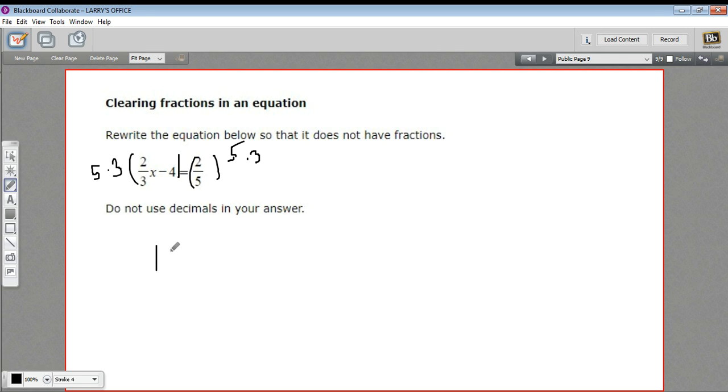Let me rewrite this. 15 times 2 thirds x minus 4 equals 2 fifths. This is going to get rid of all of the fractions, and let me show you how that works. First, we're going to distribute this 15.